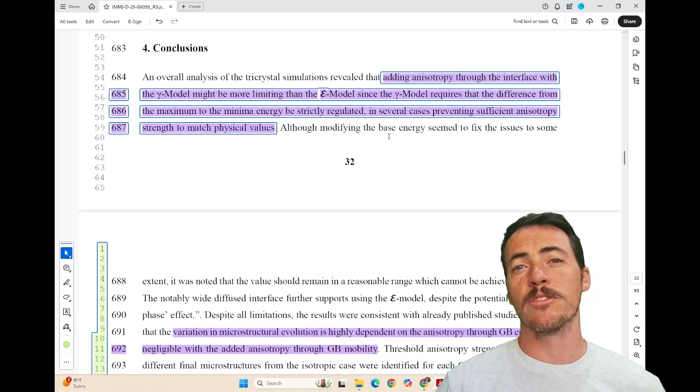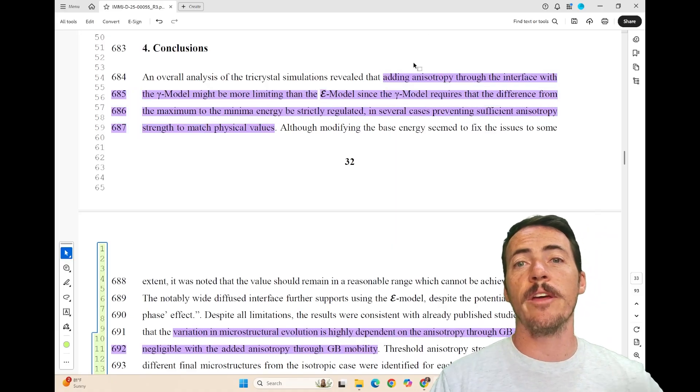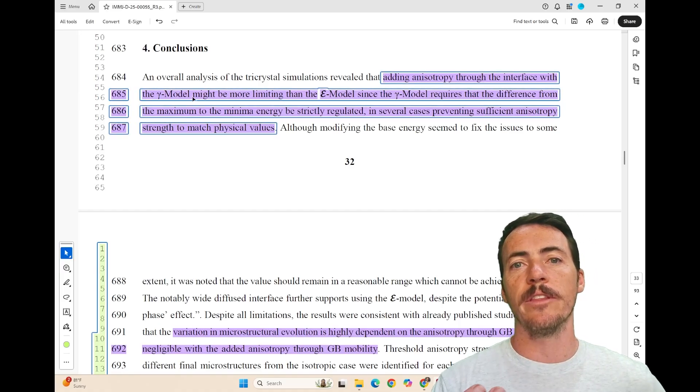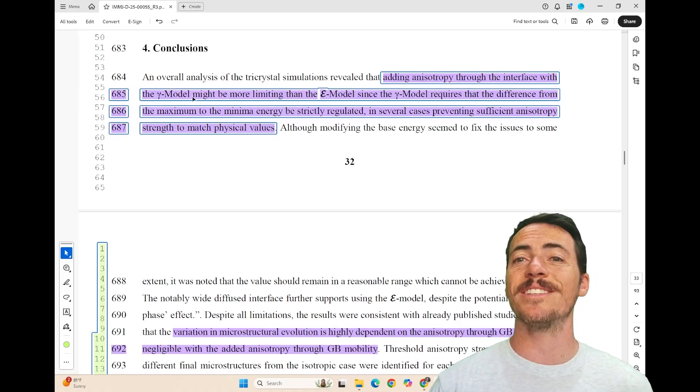So what are some takeaways from this approach? Well, first off, they show that if you add anisotropy through the interface, then the gamma model could be more limited than the epsilon model. The epsilon model is more stable.